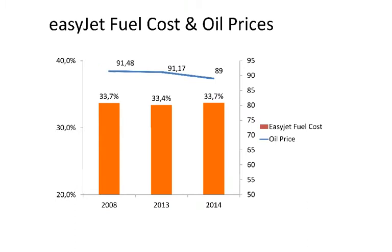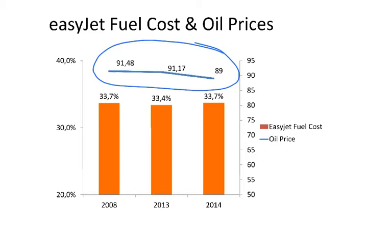Looking at this graph across three points — 2008, 2013, and 2014 — where oil prices were in the range of 85 to 95 USD per barrel, EasyJet achieved around 33%, quite consistently. So that was the total fuel cost for EasyJet across those years.